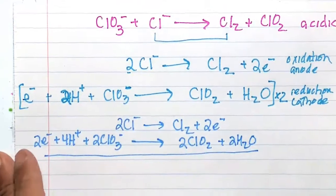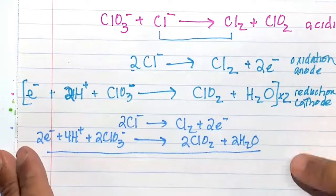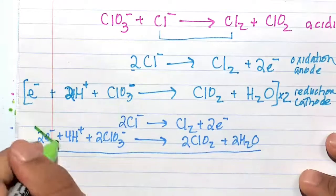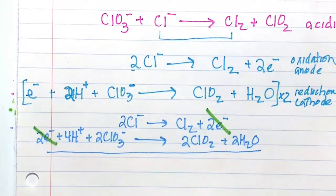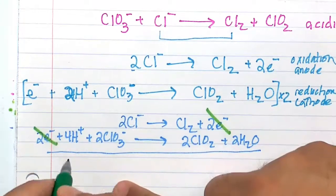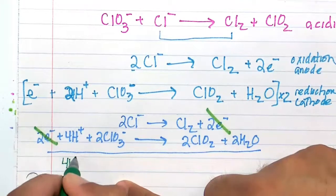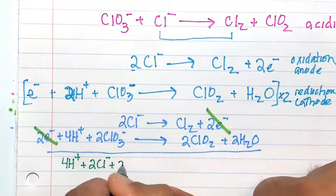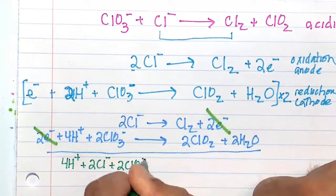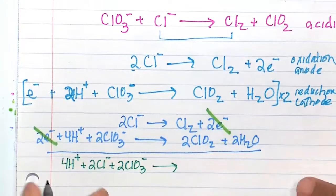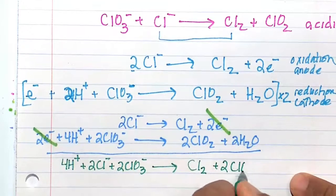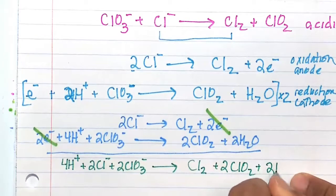So we add back our oxidation half reaction with our reduction half reaction. We balance out our free electrons because we cannot have free electrons anywhere in the problem. And our final answer is going to be 4H+ plus 2Cl- plus 2ClO3- and that's going to yield as products diatomic chlorine plus 2ClO2 plus two waters.